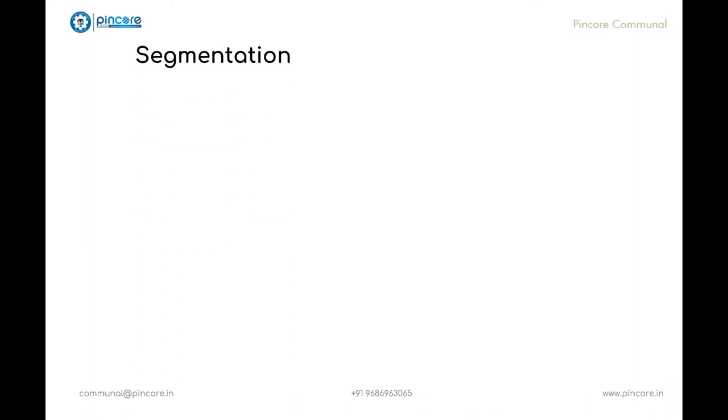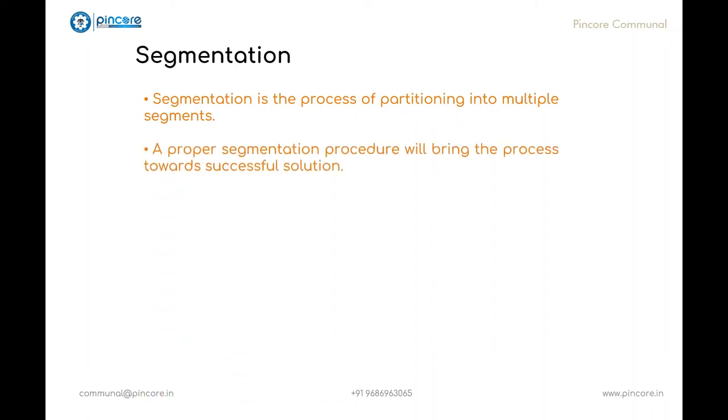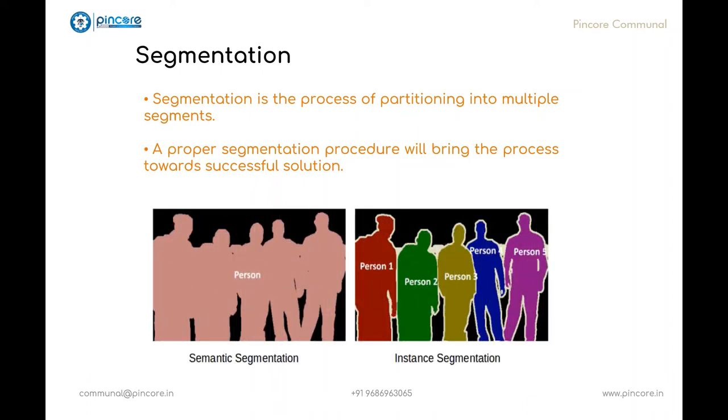Let's look into the next step in fundamentals, that is segmentation. The process of partitioning into multiple segments or into its constituent parts is called as segmentation. It is generally used to locate the boundaries of an object. In general, we can say the autonomous segmentation is one of the most difficult steps in digital image processing because a proper segmentation procedure will bring the process towards successful solution of imaging problems. And if it requires objects to be identified individually, then segmentation is very important step. We can also say that the more accurate segmentation, more likely recognition is to succeed. So in this, we have different types of segmentations where semantic segmentation, where the background and the image will be differed, followed by the instance segmentation, where the background and the recognized images differ in colors.